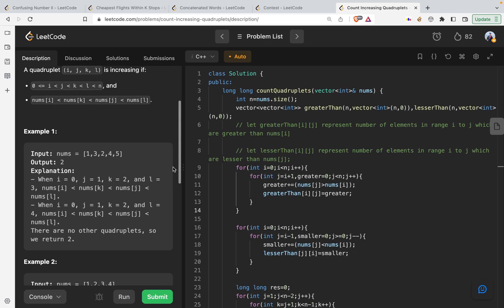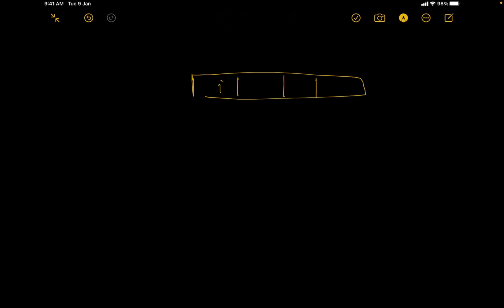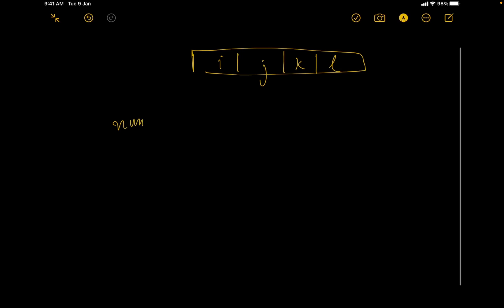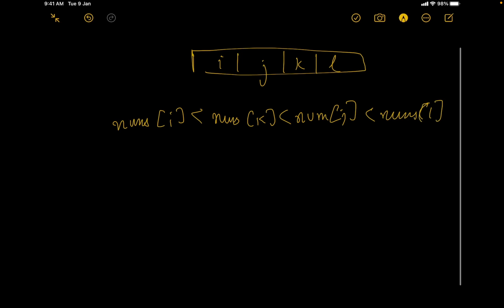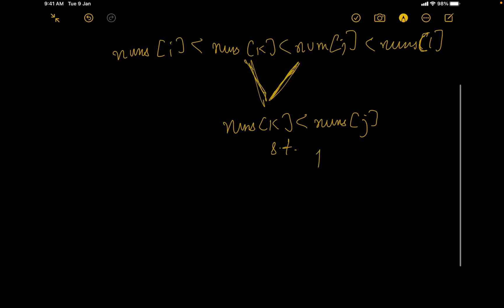We will be using DP to solve the problem. The inequality we need to satisfy is nums[i] < nums[k] < nums[j] < nums[l]. This is tough to solve directly, so let's try to break it down further. I want to find two numbers nums[k] < nums[j] such that the indices are arranged with j < k.